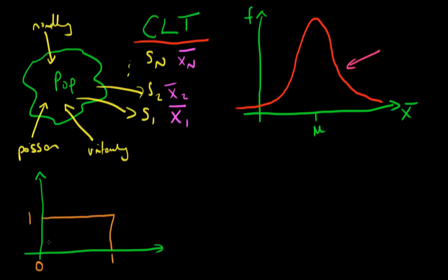So my x values can take on any value between 0 and 1 and the PDF looks something like this. So why is it the case that if I calculate the sample mean it happens to be normally distributed? If we didn't have any other information, our best guess at the value of x we would get from taking one sample from that population would be a value of 0.5.